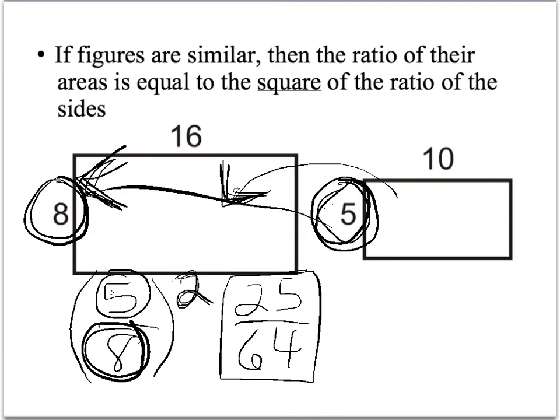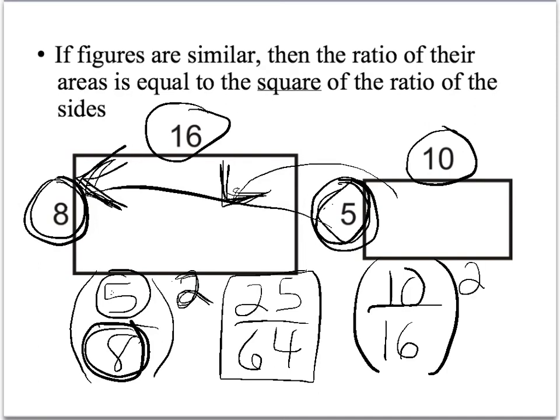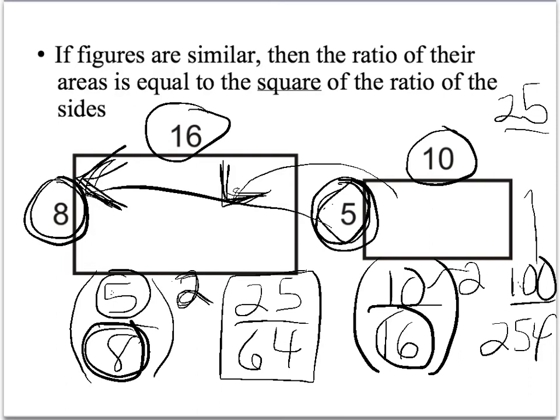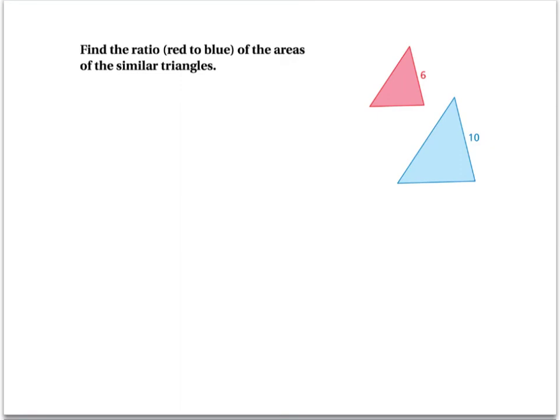I can show you that it's going to be identical if I do the same thing on this one. 10 over 16. Again, I'm going to square it. I'm kind of running out of room here, but if I square 10, 10 times 10, I'm going to get 100. That goes over 256. Now, I have to reduce that. 100 divided by 4 is 25, and 256 divided by 4 gets me 64. So, the ratio is identical no matter where you pick it.